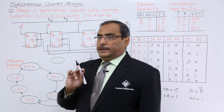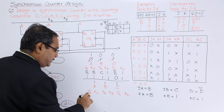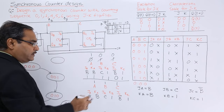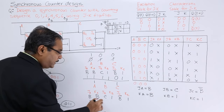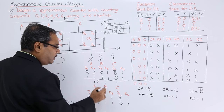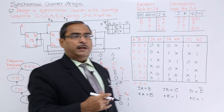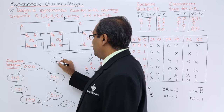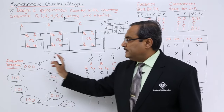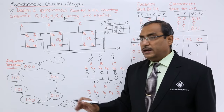For missing state 7 (binary 1,1,1): JA=B=1, KA=B=1; JB=C=1, KB=1; JC=B̄=0, KC=1. With JA=KA=1, A toggles: 1→0. With JB=KB=1, B toggles: 1→0. With JC=0, KC=1, C goes to 0. So from state 7, the next state is 0,0,0 = 0. The sequence diagram is now complete with all 8 states (0–7) accounted for, showing both missing states eventually re-enter the valid sequence.